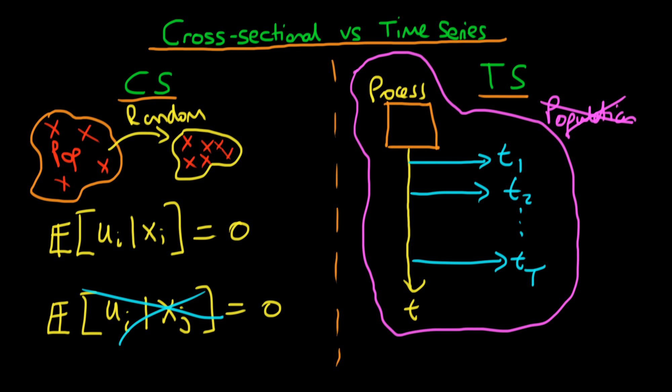But notice that there is a key difference between time series and cross-sectional data because of the fact that we cannot assume that these samples which we take throughout time are independent of one another. And that's because essentially they're coming from the same process and they're coming from the same individual.